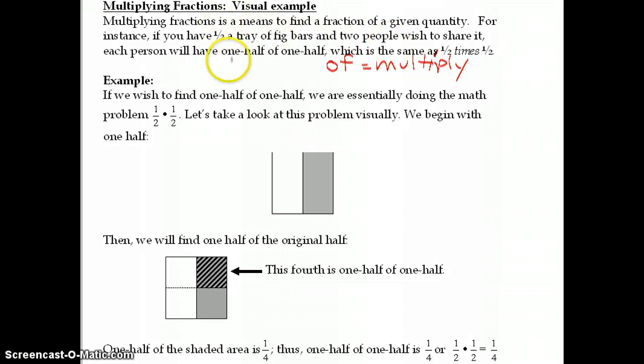For example, if we want to find what is one half of one half, that means that we're going to multiply one half times one half.